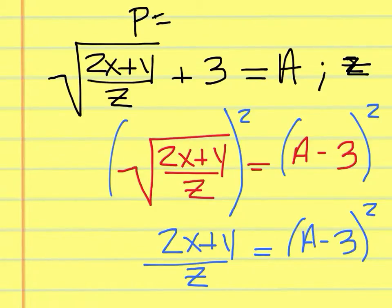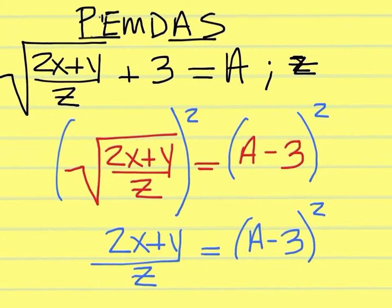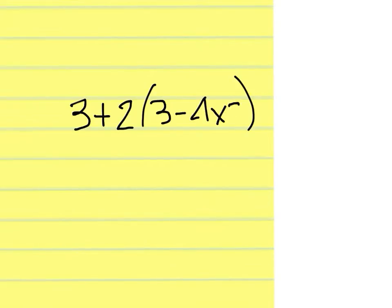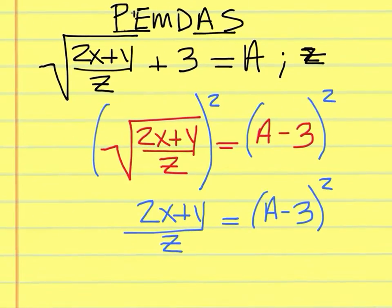Remember the order of operations: PEMDAS. We did addition and subtraction first, but now we've skipped over to the square root sign, which you could consider parentheses or exponents. The reason is because we can't do anything underneath it until we get rid of it — just like a problem such as 3 plus 2 times the quantity 3 minus 4 times 2, where you can't do anything outside until you take care of inside the parentheses first. So once you do all of that, you go back outside and start over with the order of operations. That's what we're doing here.